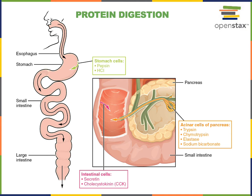Trypsin is secreted by acinar cells of the pancreas as the inactive precursor trypsinogen. Trypsinogen is activated by a brush border enzyme called enteropeptidase found in the duodenum, which converts trypsinogen into the active enzyme trypsin.